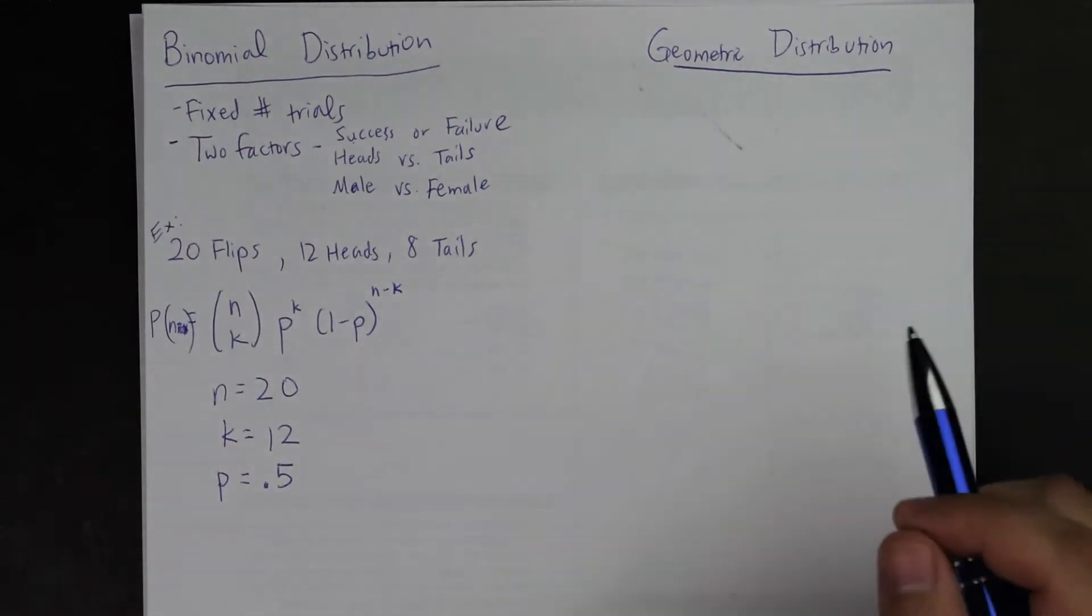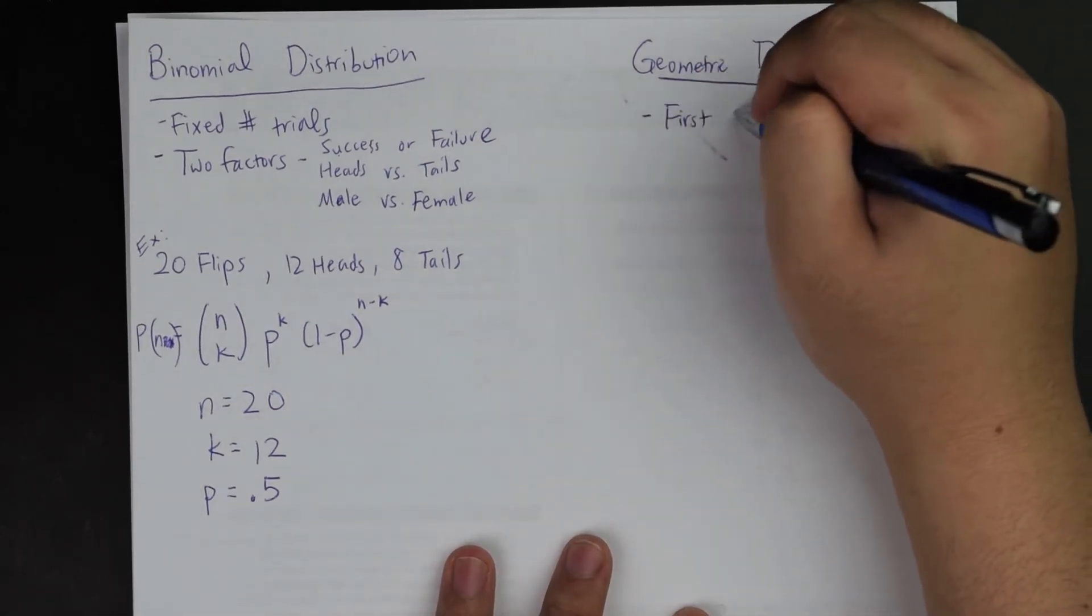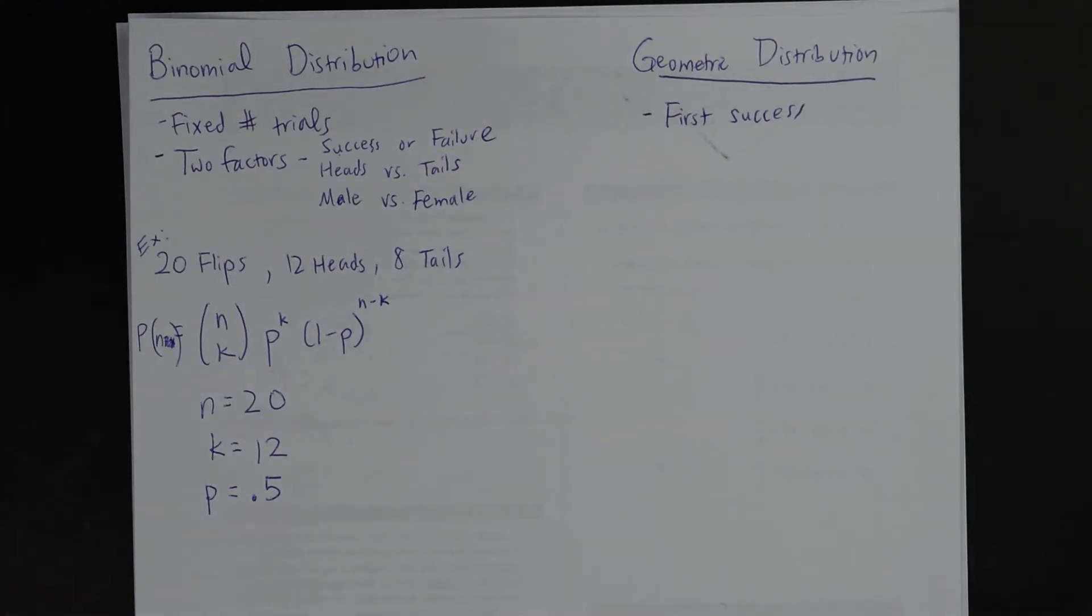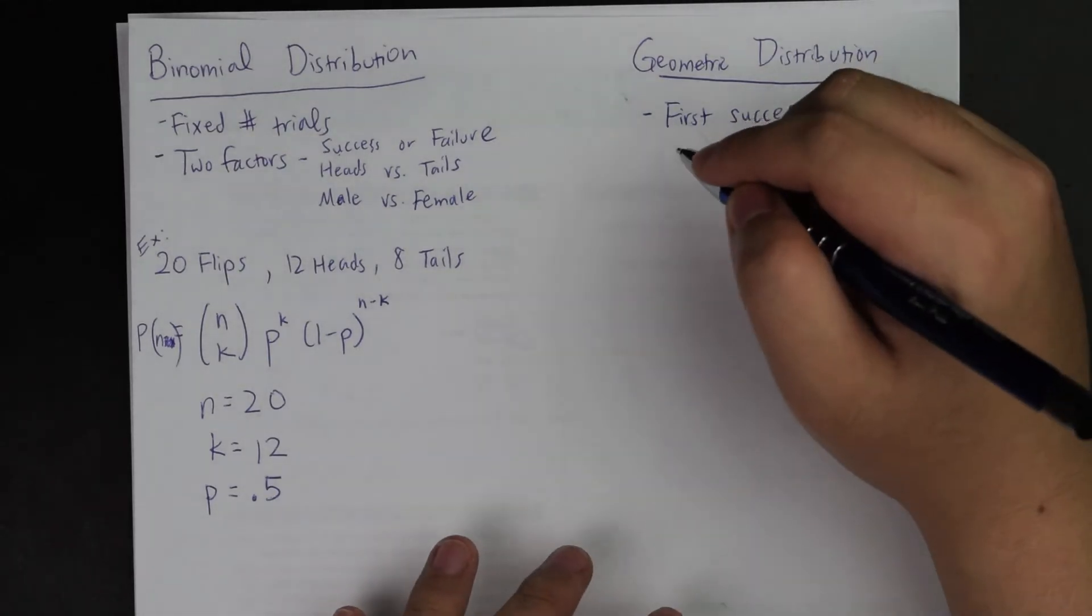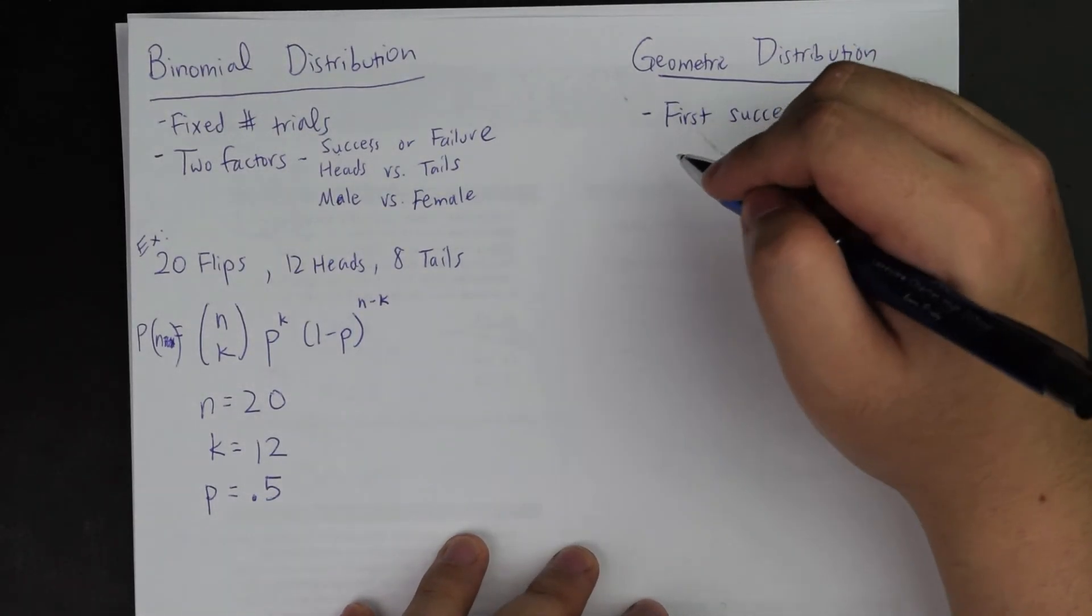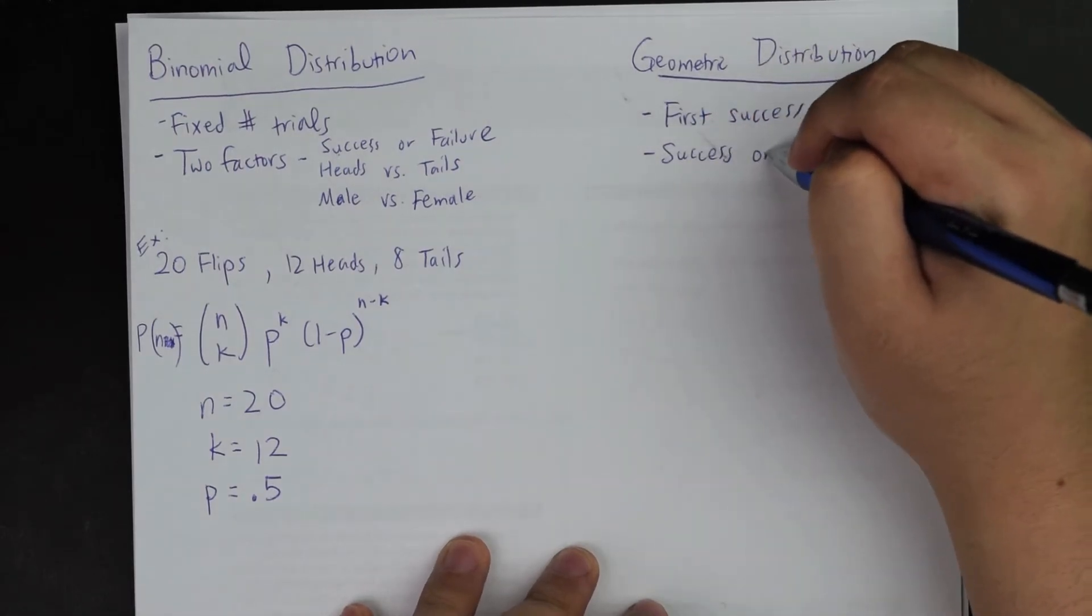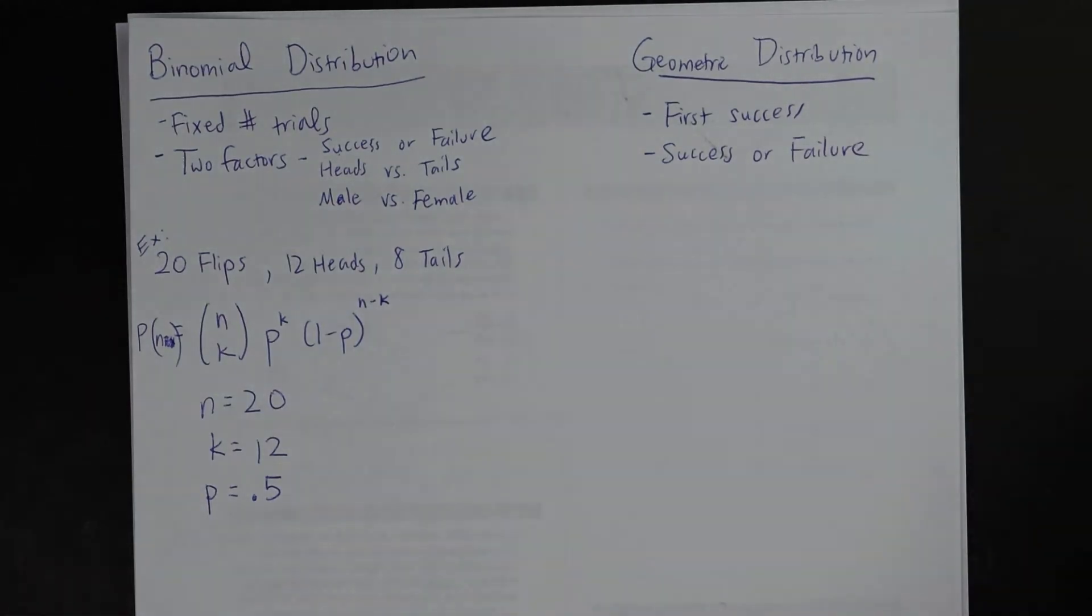But geometric distribution is all about the first success. That means, when does the first time does this become successful? When can I say that something occurs and we are good? Usually it is also very similar to a success or failure concept, but it's mainly focused on that.